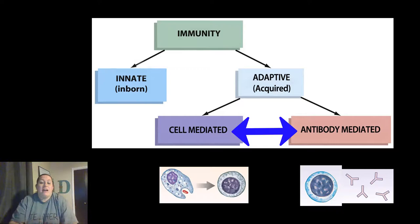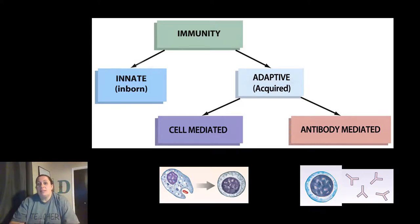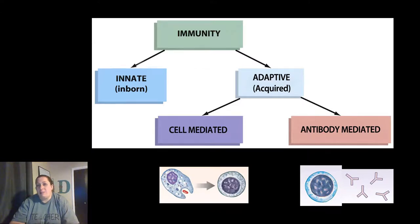The last type of T cell we want to talk about are the memory cells. Memory cells remember what they have fought before, therefore they can fight it quicker and more effectively the next time they are exposed.